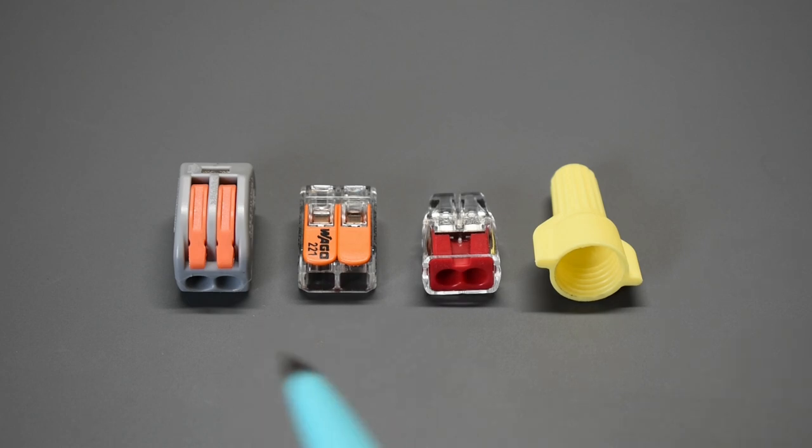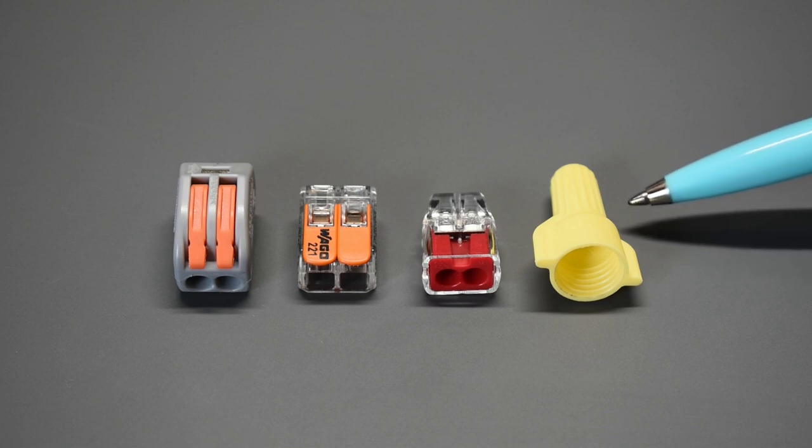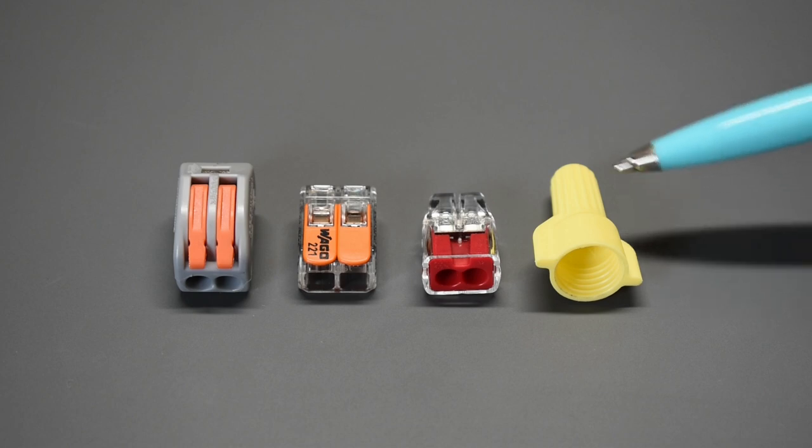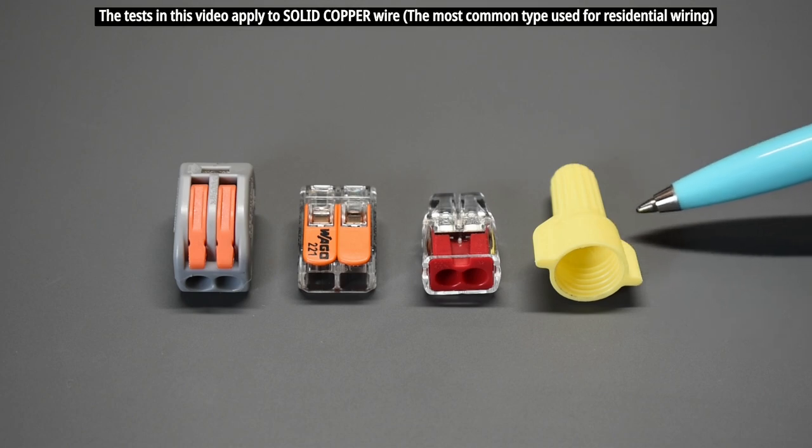So in today's video, we're going to be putting each one of these connectors to the test. I'm going to be using the same testing method that was shown in a previous video. I'll use identical lengths of number 12 solid copper wire and place a constant load on each connector for 15 minutes. It's going to be a high current load, around 18 amps.